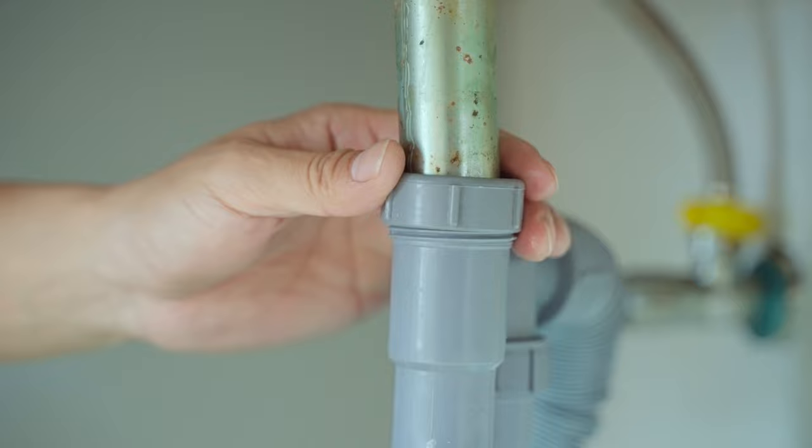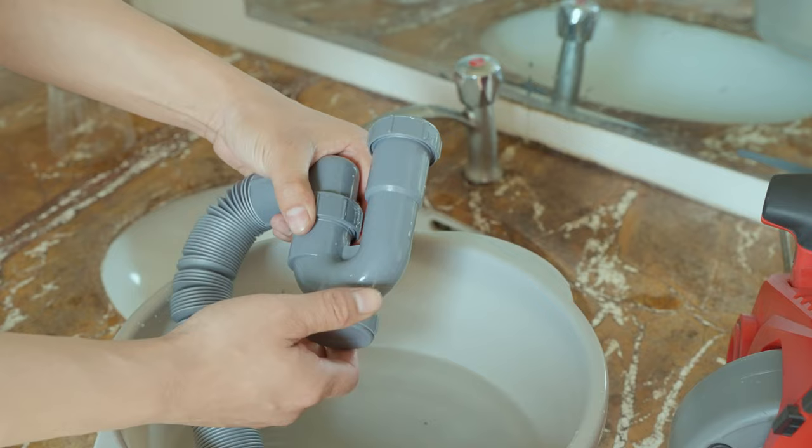Remove the P-trap to see if the clog is located inside. If so, you can use a bent wire hanger to remove the clog.